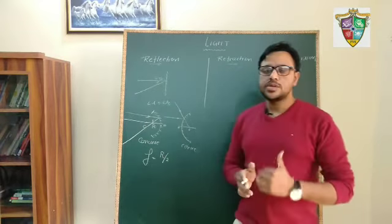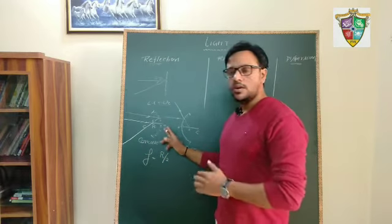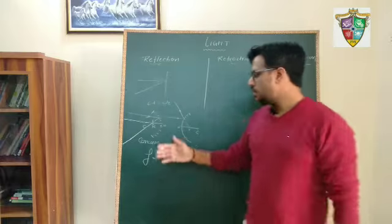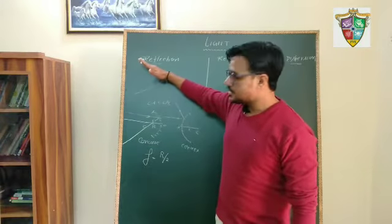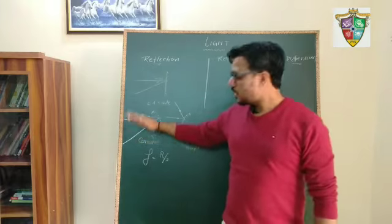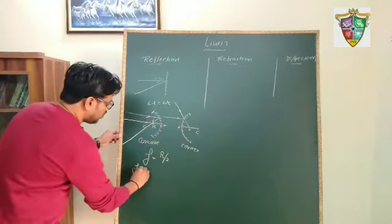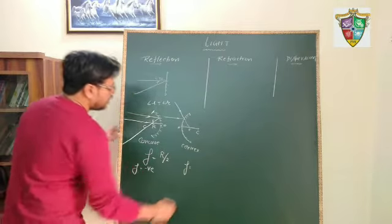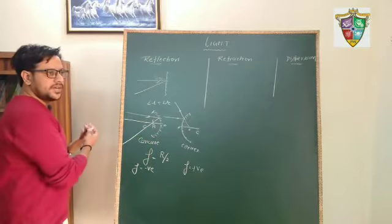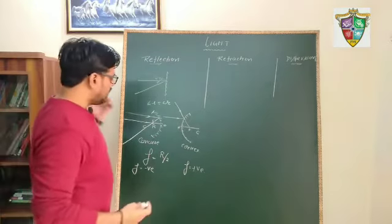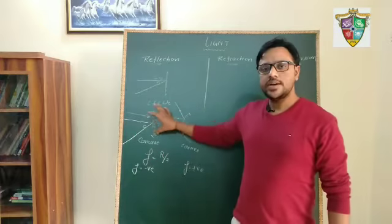We also have to keep in mind the sign conventions. All distances are measured from the pole. Distances to the left of the pole are taken as negative; to the right are positive. Heights upward to the principal axis are taken as positive; downward heights are taken as negative. So focal length for a concave mirror is always negative, and for a convex mirror it is taken as positive. The object is placed on the left side of the mirror, and we can see different cases in which an image is formed by a concave mirror and a convex mirror.